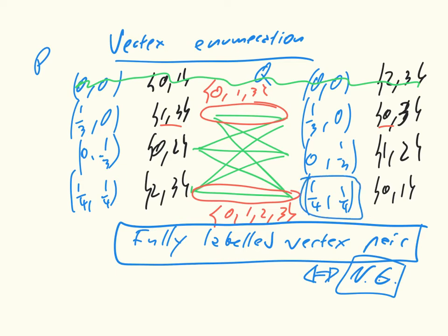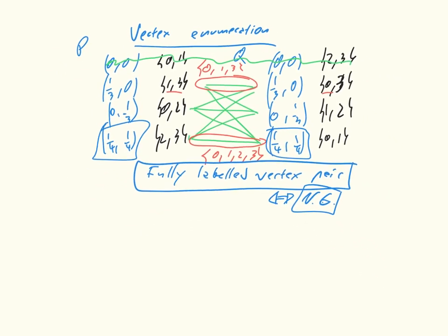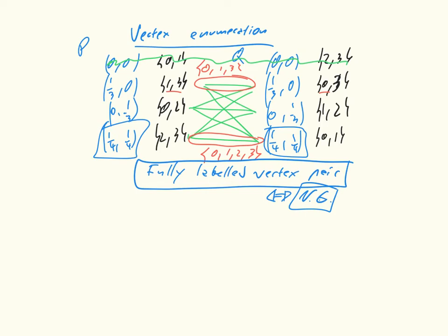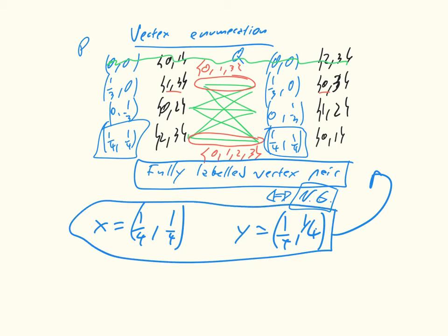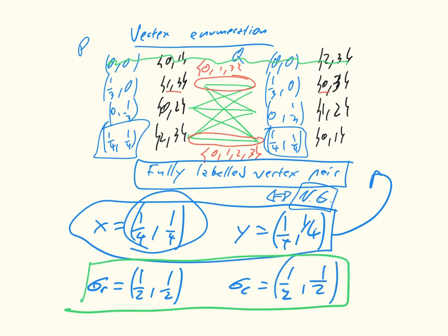So we have (1/4, 1/4) and (1/4, 1/4), and we're saying that those correspond to a Nash equilibria. So the final step is to say, okay, x equals (1/4, 1/4) and y equals (1/4, 1/4). This is not a Nash equilibria. This is a fully labeled vertex pair. We get the Nash equilibria by normalizing. So that's simply saying, let's take this particular vector, sum all of its entries, and divide by that sum. So we get that sigma_r is equal to (1/2, 1/2), and sigma_c is equal to (1/2, 1/2). And that is a Nash equilibria.